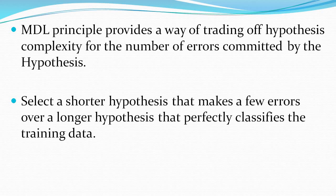The minimum description length principle provides a trade-off between hypothesis complexity and the number of errors committed by the hypothesis. It acts as a trade-off between these two factors. It will select a shorter hypothesis which makes a few errors rather than a longer hypothesis that perfectly classifies the training data. We use this principle to encode and transmit the hypothesis securely, encoding it using some code — C1 for the hypothesis.